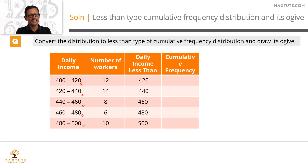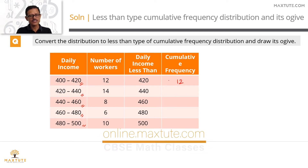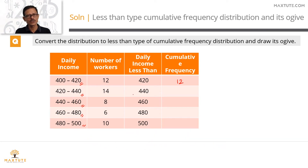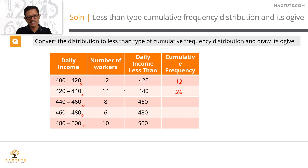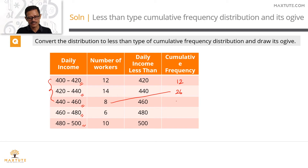How many people earn less than 420? Anyone in the 400–420 interval earns less than 420, so this equals the frequency of the first class interval. For less than 440, we add those earning 400–420 plus 420–440, giving 26. For less than 460, that's 12 plus 14 plus 8, which is 26 plus 8, equal to 34. Alternatively, just add 8 to 26 to get 34.